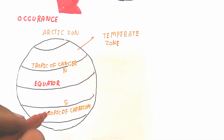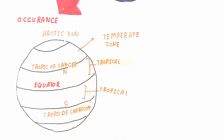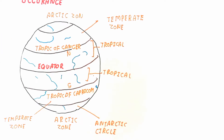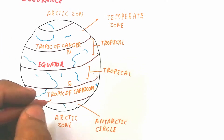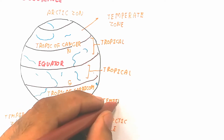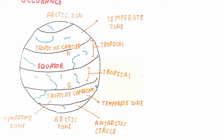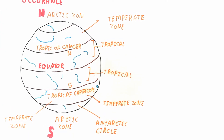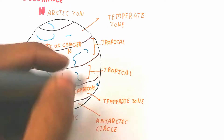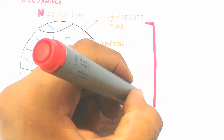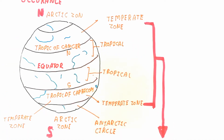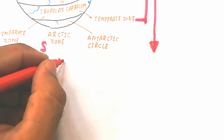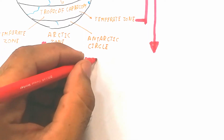You can watch this diagram to identify the occurrence of Xanthophyta. Xanthophyta is present in the temperate zone, as shown in the figure. Vaucheria is present in this temperate zone, in both the north and south of the Earth.